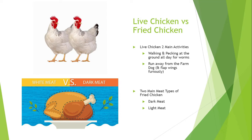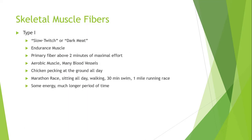We're going to talk about those two situations and the types of muscle fibers that all humans have. The first skeletal muscle fiber is Type 1 muscle fiber — slow twitch, or the dark meat. It is also the endurance muscle fiber, the primary muscle fiber used above two minutes of maximal effort. Type 1 muscle fiber is aerobic, meaning it uses oxygen and many blood vessels. A chicken pecking at the ground all day uses a lot of Type 1 muscle fiber.